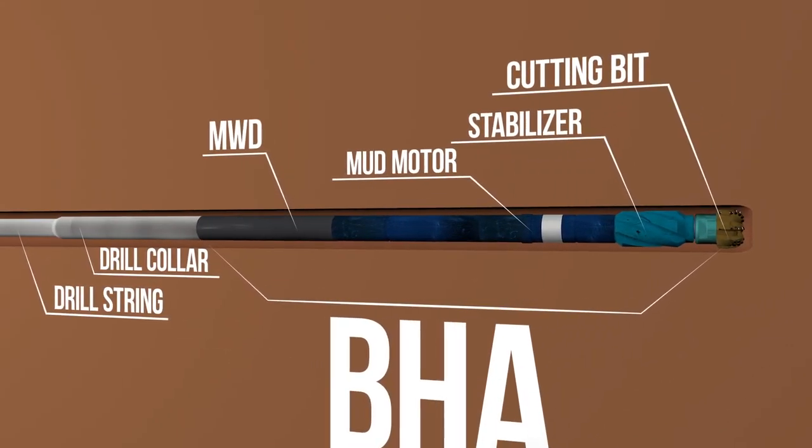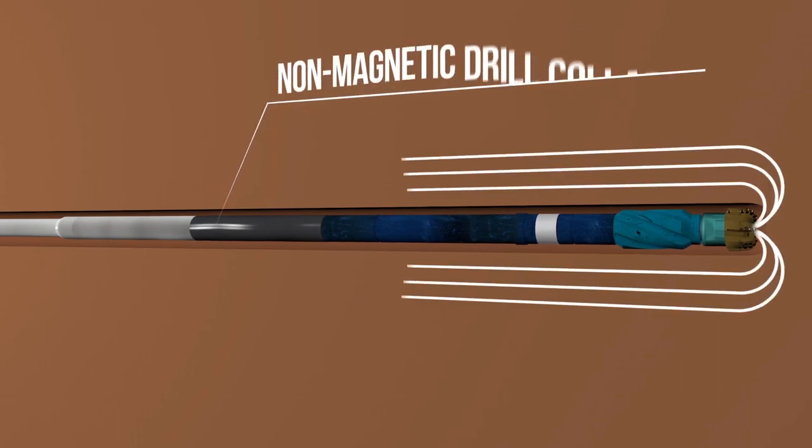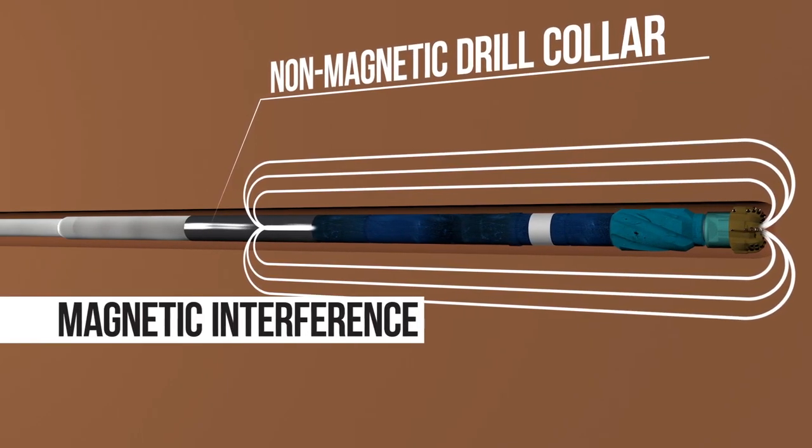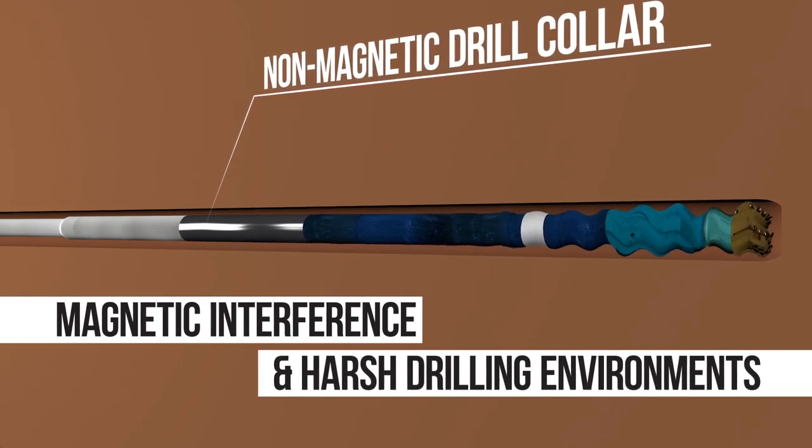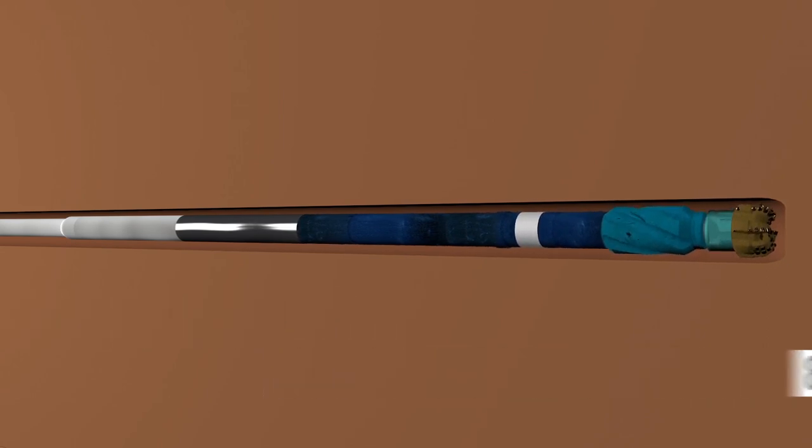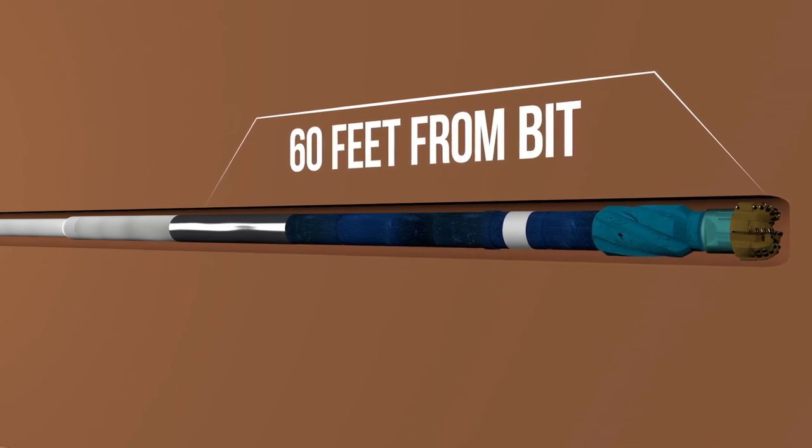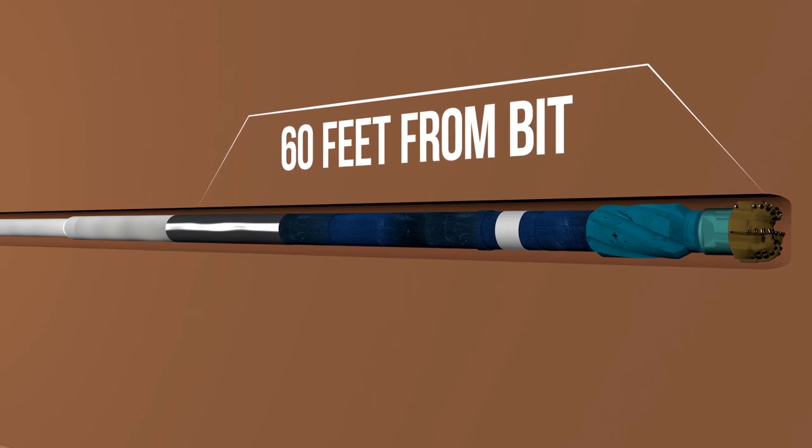Ideally, we want it as close to the bit as possible without causing measurement issues like magnetic interference and/or damage to the tool as a result of the harsh drilling environment. An MWD tool mounted upwards of 60 feet or more from the bit is not uncommon, although this varies widely depending on drilling operations.